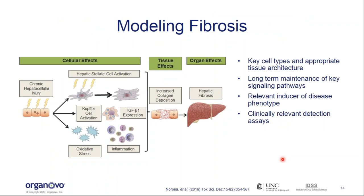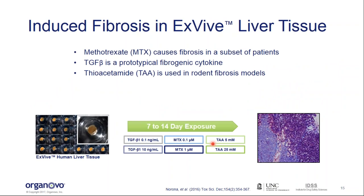Some of this work is published, done by a talented graduate student named Leah Norona in Paul Watkins' group at UNC. She approached it by thinking about the adverse outcome pathway of inducing fibrosis — either by inducing chronic hepatocellular injury with small molecules, or inducing stellate cell activation directly with TGF-beta. She used methotrexate as a fibrotic inducer — known to cause fibrosis in a subset of patients — TGF-beta, a prototypical fibrogenic cytokine, and thioacetamide, which is used to generate rodent fibrosis models. She used our standard 3D bioprinted liver tissue without Kupffer cells and performed a 7 to 14 day exposure at two different doses.